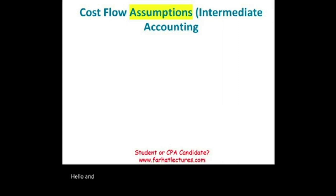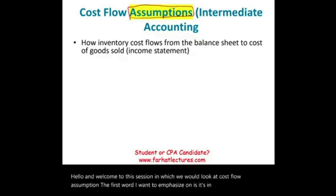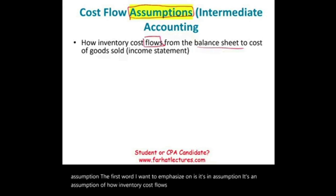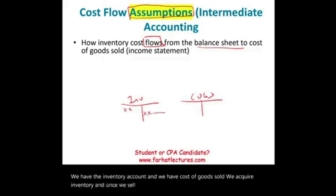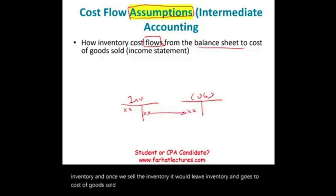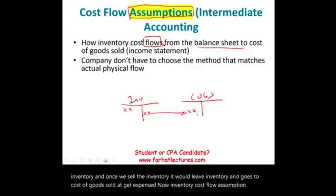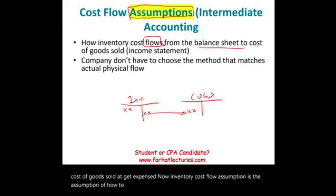Hello, and welcome to this session in which we look at cost flow assumption. The first word I want to emphasize is that it's an assumption — an assumption of how inventory cost flows from the balance sheet to the income statement. Simply put, we have the inventory account and cost of goods sold. We acquire inventory, and once we sell it, it leaves inventory and goes to cost of goods sold as an expense. Inventory cost flow assumption is the assumption of how to account for those transfers from inventory to cost of goods sold.